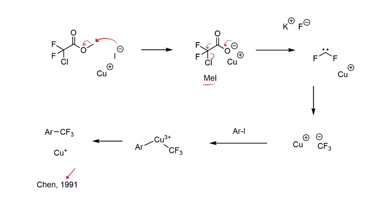That carboxylate anion can then undergo alpha elimination — pushing electrons onto the carbon while chloride leaves. You also see this kind of alpha elimination in the Reimer-Tiemann formylation when generating dichlorocarbene from chloroform under basic conditions. In this case, because we have fluorines, the generated species is highly reactive difluorocarbene, which is sufficiently electrophilic to trap out the fluoride introduced from potassium fluoride. Then in the presence of copper(I), you generate some sort of copper-CF3 species — not a free ionic salt, but some aggregate — and copper(I) turns up quite often in trifluoromethylation chemistry.